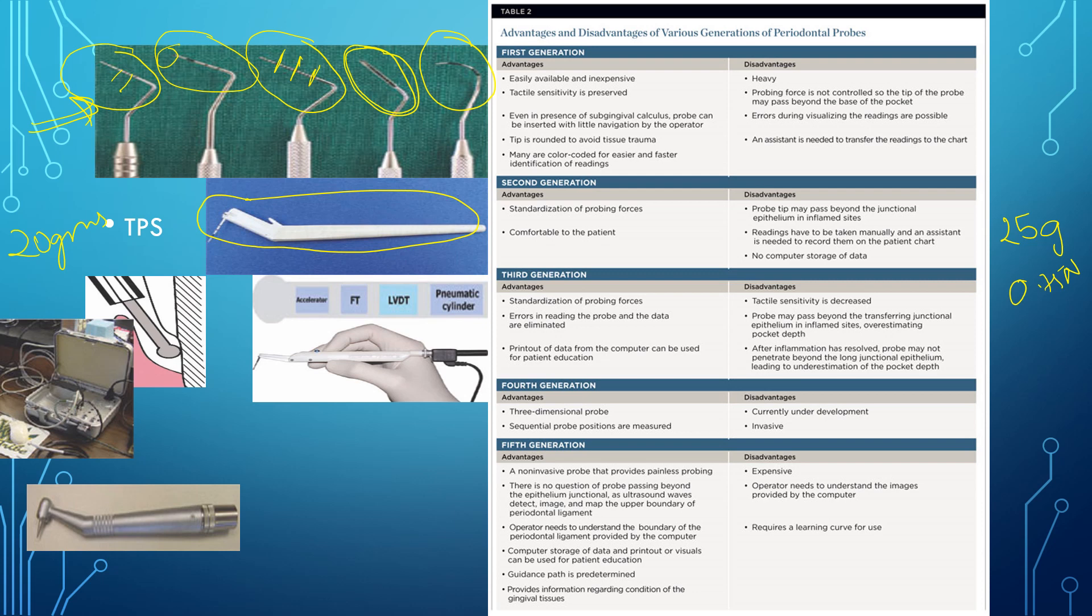Now talking about the third generation probe, they are the automated probing systems. Here the software integrates with the existing computer system to provide the computerized periodontal charting. This shown over here is the Florida probe, which is a third generation probe which was devised by Gibbs in 1987. The advantage of this is the entire data can be printed out easily and it can be shown to the patient for education purpose. The chances of errors are minimal in this kind of probe. This Florida probe has a constant pressure of 15 grams and a precision of 0.2 millimeters is maintained.